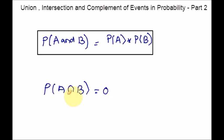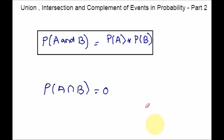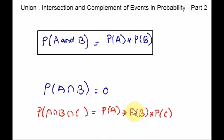Intersection means common. So if they are disjoint, there will be nothing common for both events, and hence A intersection B is null. If we have more than two independent events — for example, A, B, C — then when this occurs, the probability of intersection coming from all three events applies accordingly. This is all about the formula for intersection of events in probability.